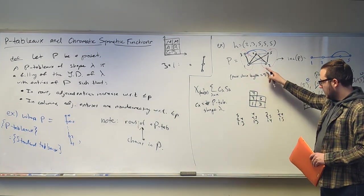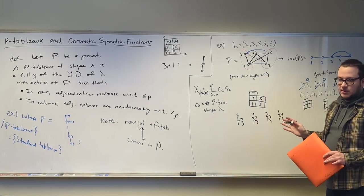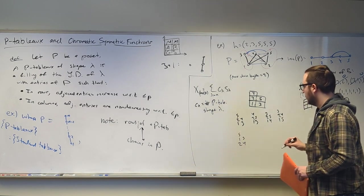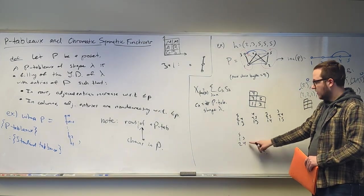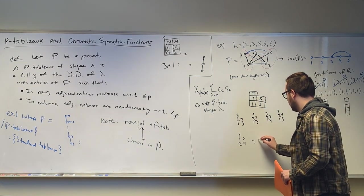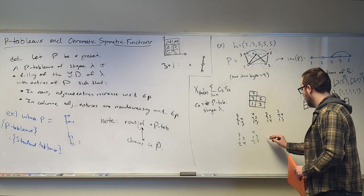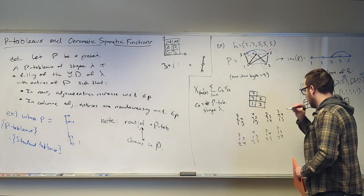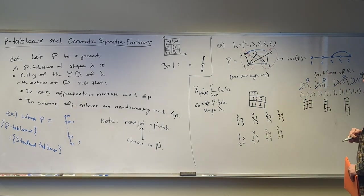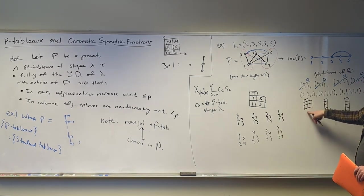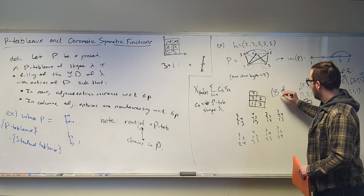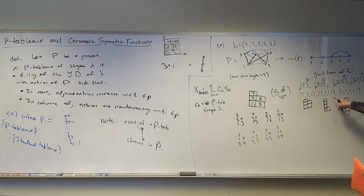So, it turns out there's going to be 8 of these. Let me write them all down for you. So, we're going to have 1, 3, 2, 4, 5. 1, 3, 2, 5, 4. 1, 4, 2, 5, 3. 1, 5, 2, 4, 3. The other thing to note, 1 and 2 are incomparable. And so, I could go 2 and then 1 in the column. That's perfectly fine. So, I could do something like 2, 4, 1, 3, 5. Also, 4 and 3 are incomparable. So, this is still fine. 2, 5, 1, 3, 4. 2, 5, 1, 4, 3. 2, 4, 1, 5, 3. So, these are in fact all 8 P tableau of shape 2, 2, 1 using this poset P.